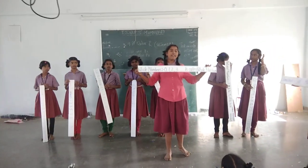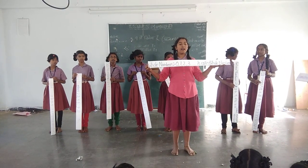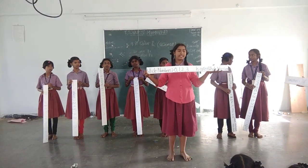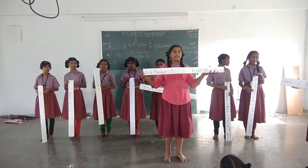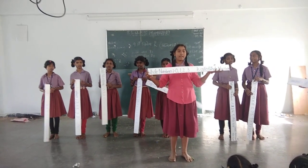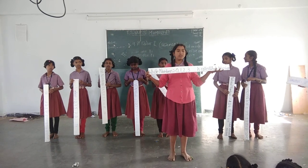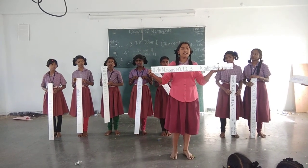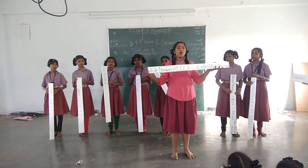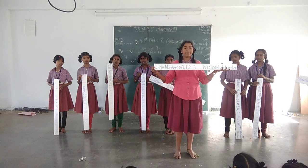Whole numbers — the definition is: counting numbers plus 0 are called whole numbers. Thus 0, 1, 2, 3 are called whole numbers. Whole numbers are denoted by capital W.